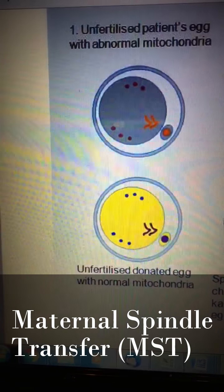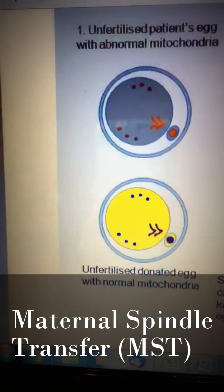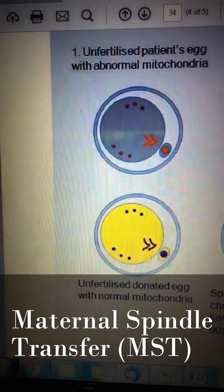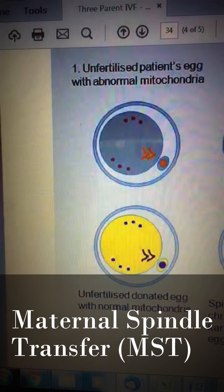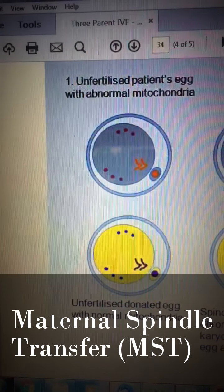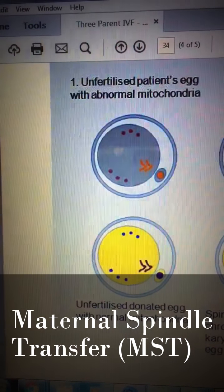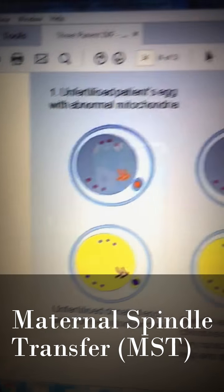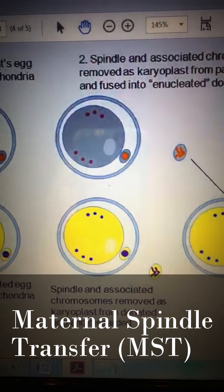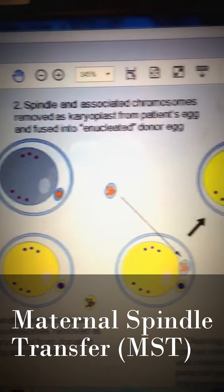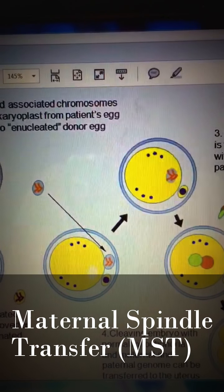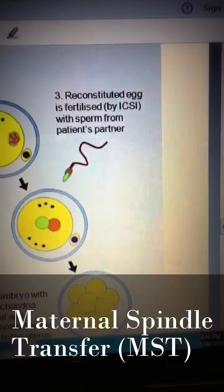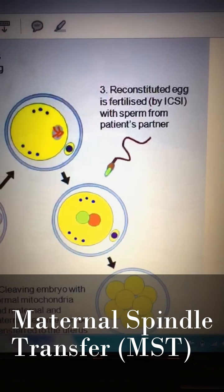In the maternal spindle transfer, or MST, it differs from PNT in that rather than transferring a pronucleus from one zygotic body to another, the MST process involves the transfer of genetic material from the contracting mother's egg to the donor's egg prior to the donor's egg being fertilized. The spindle of chromosomes is removed from each egg, and the chromosomes from the mother's egg are placed into the remaining portion of the donor's egg. Afterwards, the new egg is fertilized with the father's sperm.